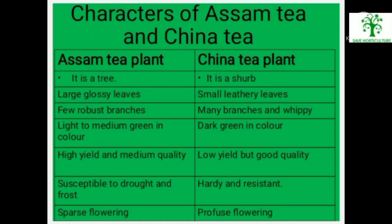Characters of Assam tea and China tea. Assam tea plant is a tree; China tea plant is a shrub. Assam has large glossy leaves; China has small leathery leaves. Assam has few robust branches; China has many branches and is weepy. Assam is light to medium green; China is dark green. Assam is high yielding but medium quality; China is low yielding but good quality. Assam is susceptible to drought and frost; China is hardy and resistant. Assam has sparse flowering; China has profuse flowering.